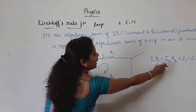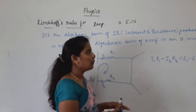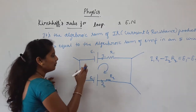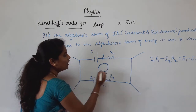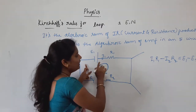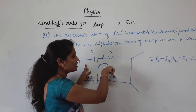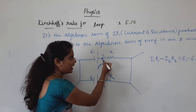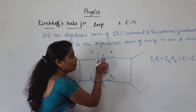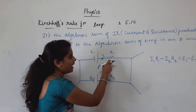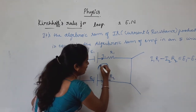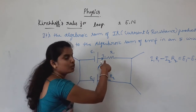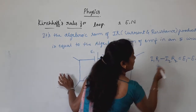Regarding the sign convention: observe the direction of current. When the current I2 is opposite to the direction through resistor R2, we take a negative sign. For EMF, when current passes from the negative terminal to the positive terminal, it is taken as positive. When current flows from positive to negative terminal, we take a negative sign.